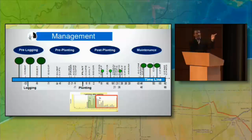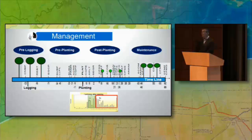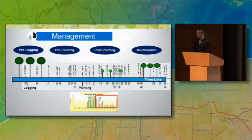Here we are checking, for example, the fertilizing — if we are following what we planned or not. For example, if we are going through a dry season and we are not going on time for fertilizer, we must be wasting money.